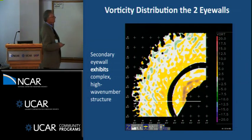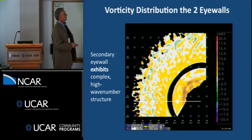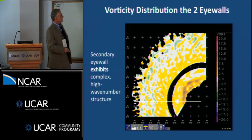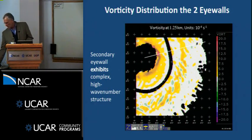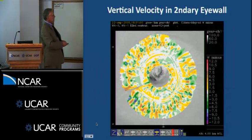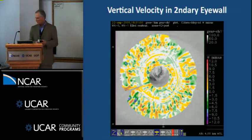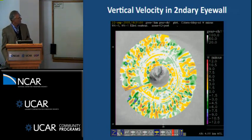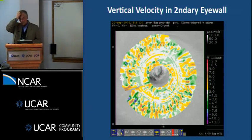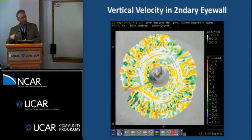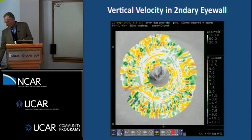One more thing about the secondary eyewall, which is something we're still working on: it has a very complex high wave number structure, visible in vorticity and other kinematic fields. In the vertical velocity field, if you count up the alternating structures, you'd have something like wave number 30. So there's a lot of alternating updraft and downdraft structure all the way around. Careful comparison between this updraft/downdraft structure and that seen in the principal rain band shows that these are rather different phenomena — the concentric secondary eyewall is not just a rain band that's become circular. It has entirely different kinematics.